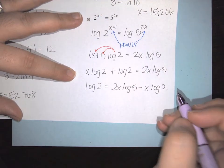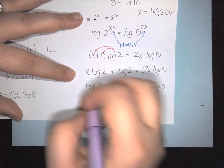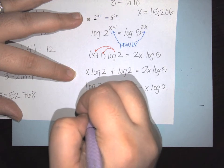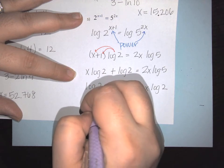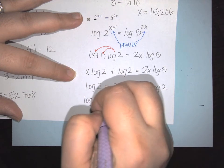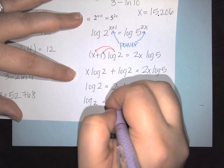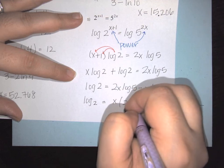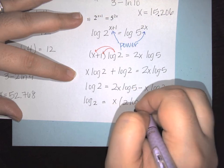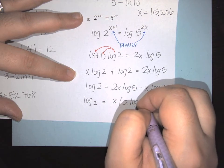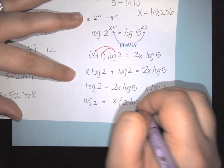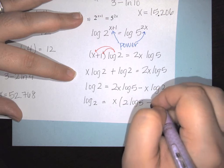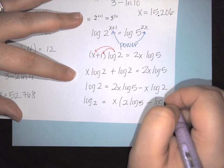Pulling the x out: log of 2 equals x times the quantity (2 log of 5 minus log of 2).